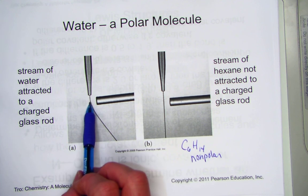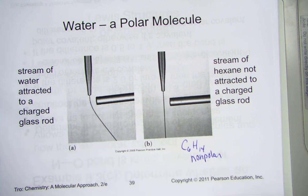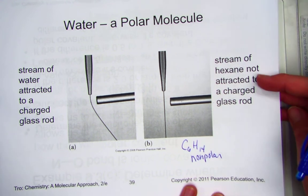Water must be polar, showing charged areas. Hexane is nonpolar, since there simply is no attraction there.